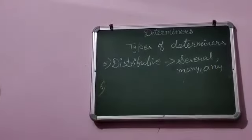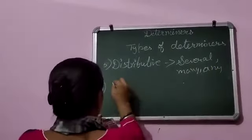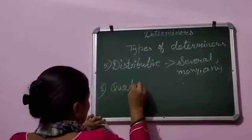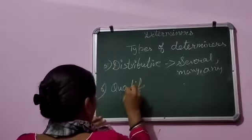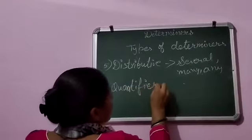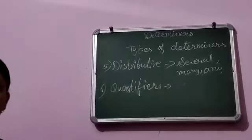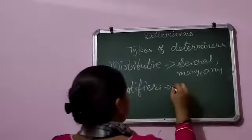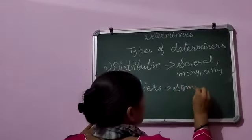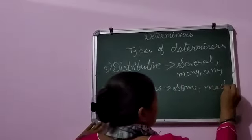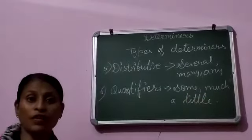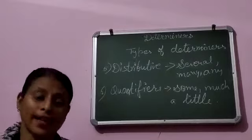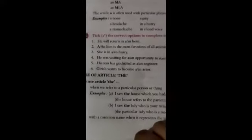Next आता है 6th number पे quantifiers। Quantifiers determiners होते हैं जो हमें quantity बताते हैं — जैसे some, much, a little, etc। Now we will explain with your exercise. We will do the exercise from your book.